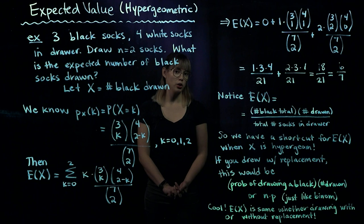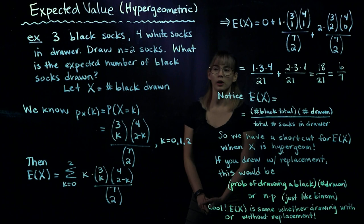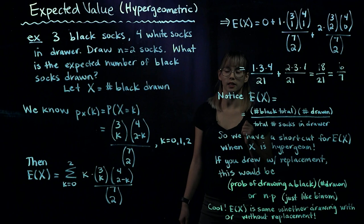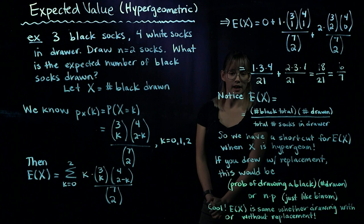Remember, with hypergeometric you are drawing without replacement. For our example, you have a drawer with seven socks, three of which are black and four of which are white. You shuffle up all your socks without looking and pull out two socks. What is the expected number of black socks that you draw?